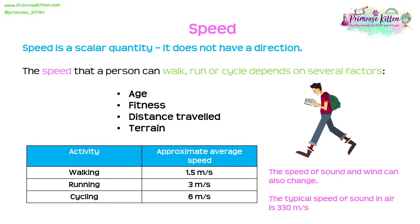Speed is a scalar quantity, meaning it does not have a direction. The speed a person can achieve depends on factors such as age, fitness, distance travelled and terrain. We need to know approximate average speeds: walking is 1.5 metres per second, running is 3 metres per second, and cycling is 6 metres per second. Make sure you learn those key facts.